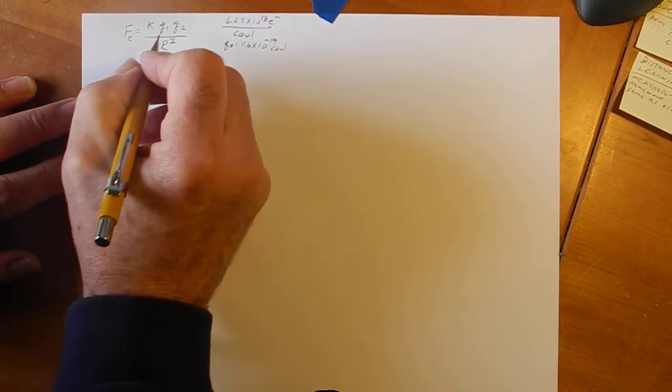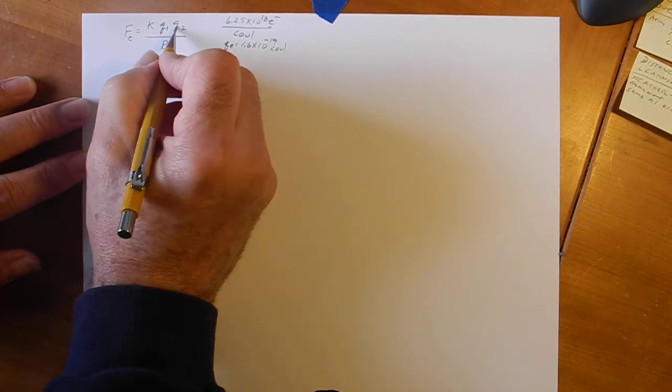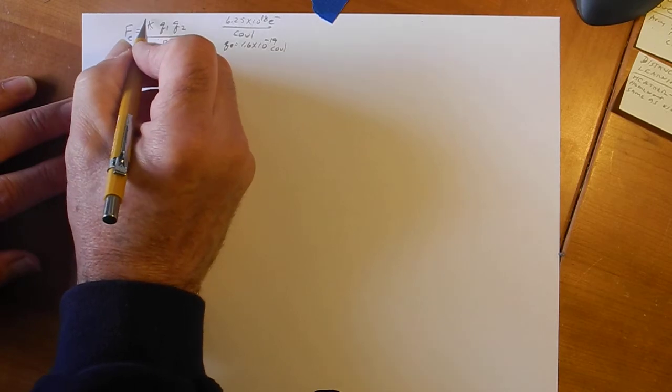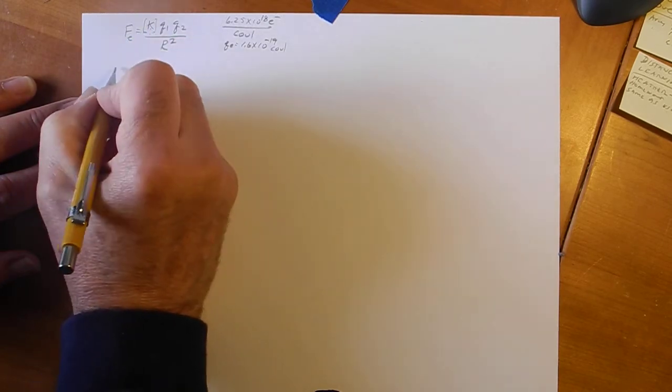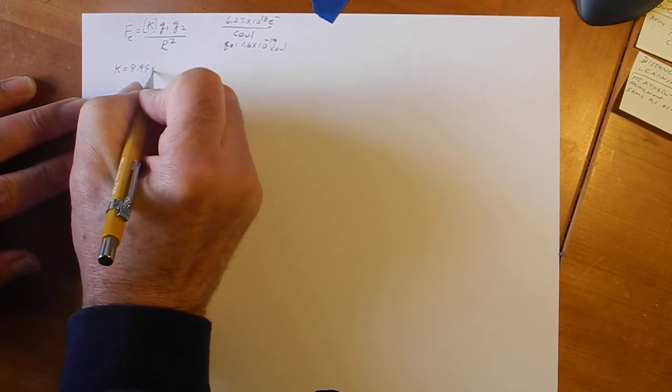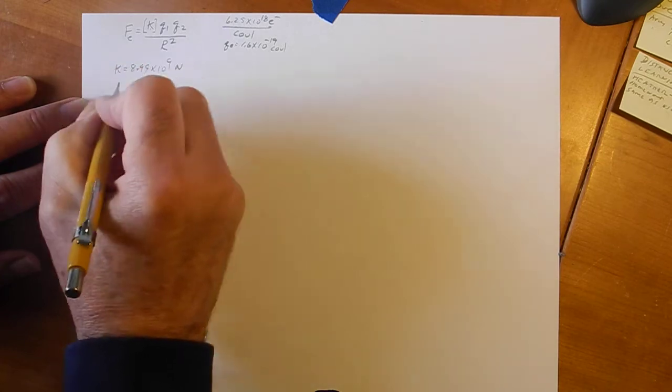So, we're going to compare this to gravity. If you have charge 1 is 1 Coulomb and charge 2 is 1 Coulomb and you separate them by 1 meter, then the force between them is this constant K right here. Okay, let's look at gravity.